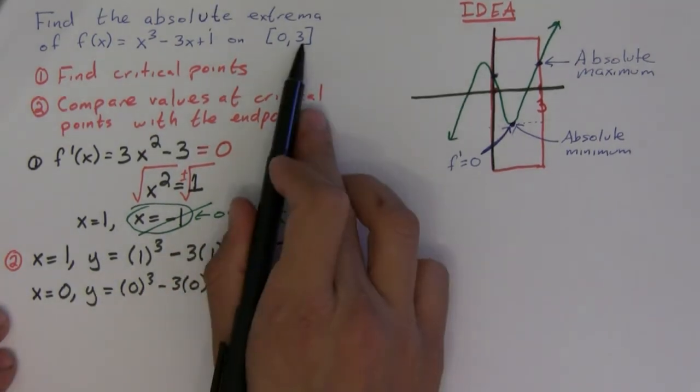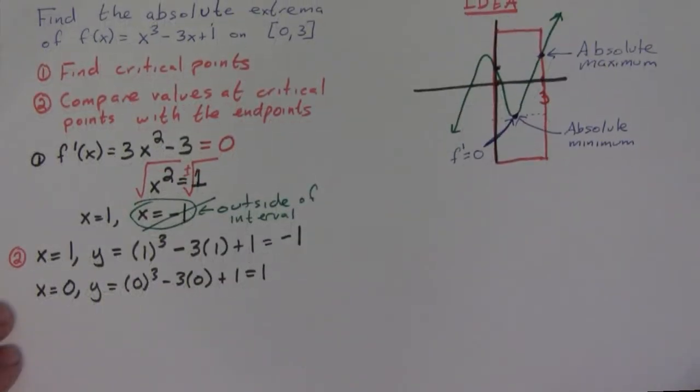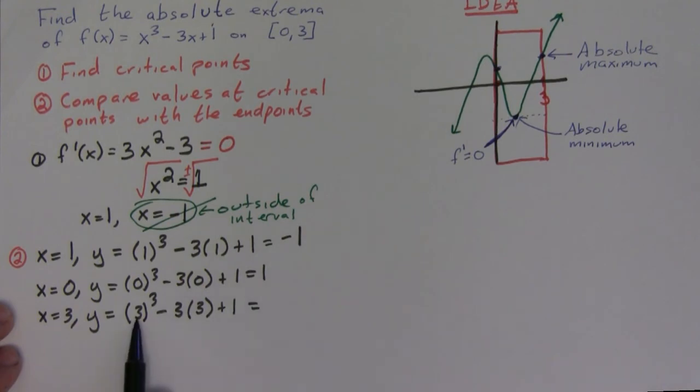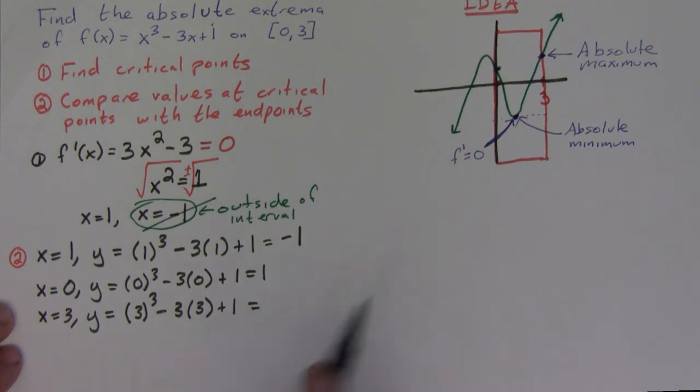And the last one, we're going to plug in three. So when x is equal to three, y is equal to three cubed minus three times three plus one. So this is equal to three cubed which is 27 minus nine which is 18, plus one is 19.